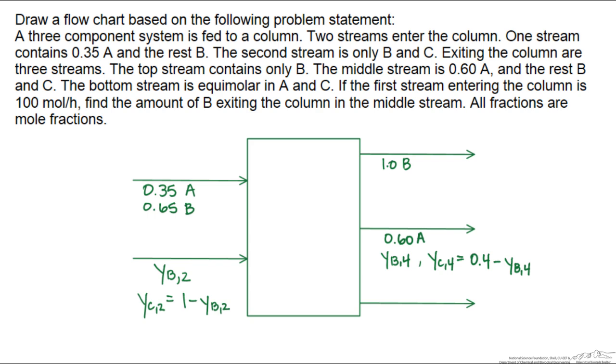So this just equals 0.4 minus YB4. The bottom stream is equimolar in A and C, so that just means this is 0.5A and 0.5C.